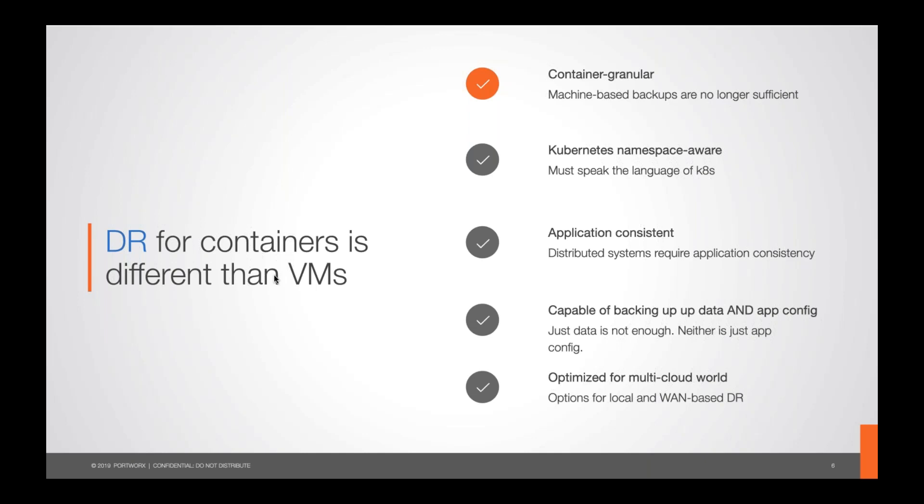The first characteristic DR for containers needs is container granularity. This gets missed when people say 'I already have a DR solution for my VMware environment, I'll just use that.' We can't use machine-based backups for containers because there's an impedance mismatch. To illustrate: I've got a simplified Kubernetes cluster with four applications — one is a three-node Cassandra ring running across three different servers, and three individual MySQL databases each serving their own application.